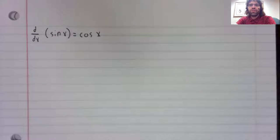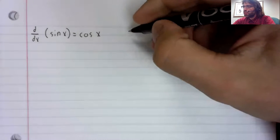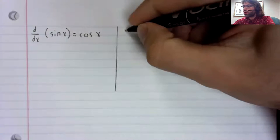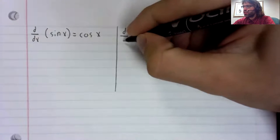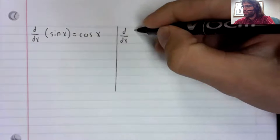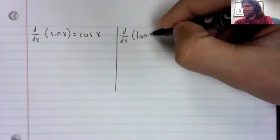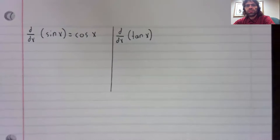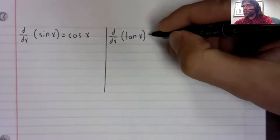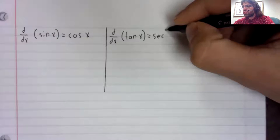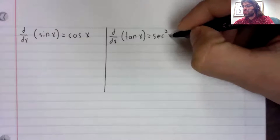The derivative of sine is cosine. Now, maybe going in a different order than you'd expect, instead of stating the derivative of cosine, we'll state the derivative of tangent, which is secant squared.